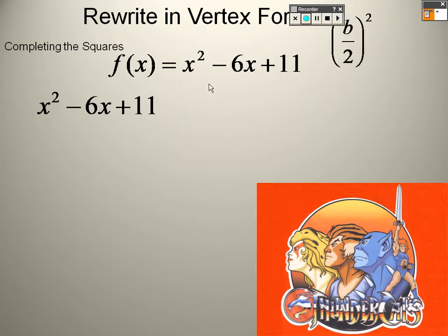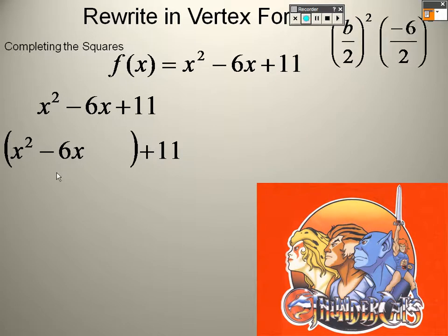To complete the squares, b over 2 squared, so that's negative 6 over 2, which is negative 3. Negative 3 squared is 9. So I plug a 9 in here.